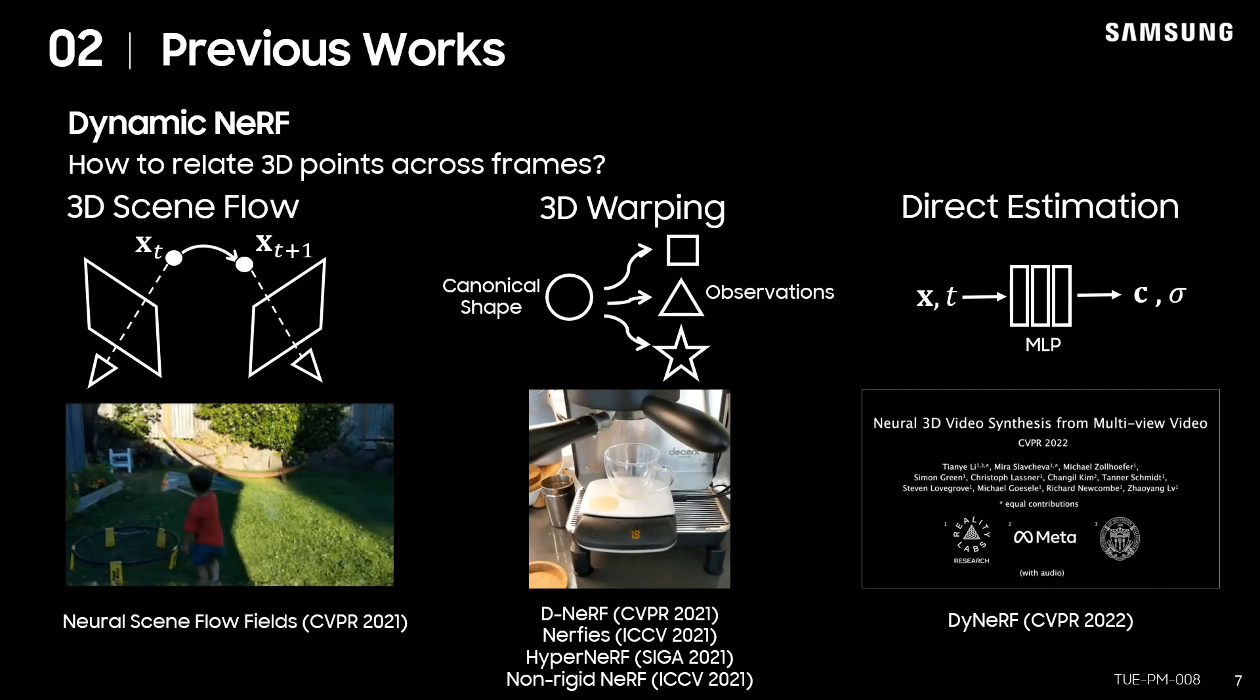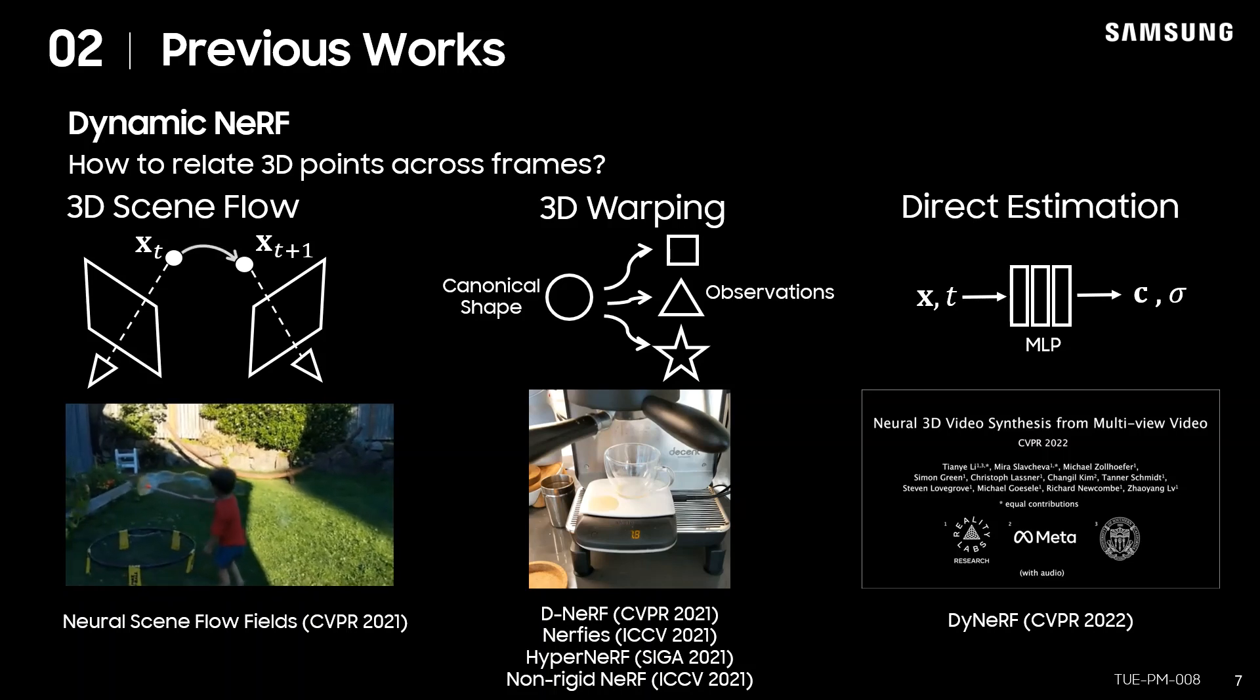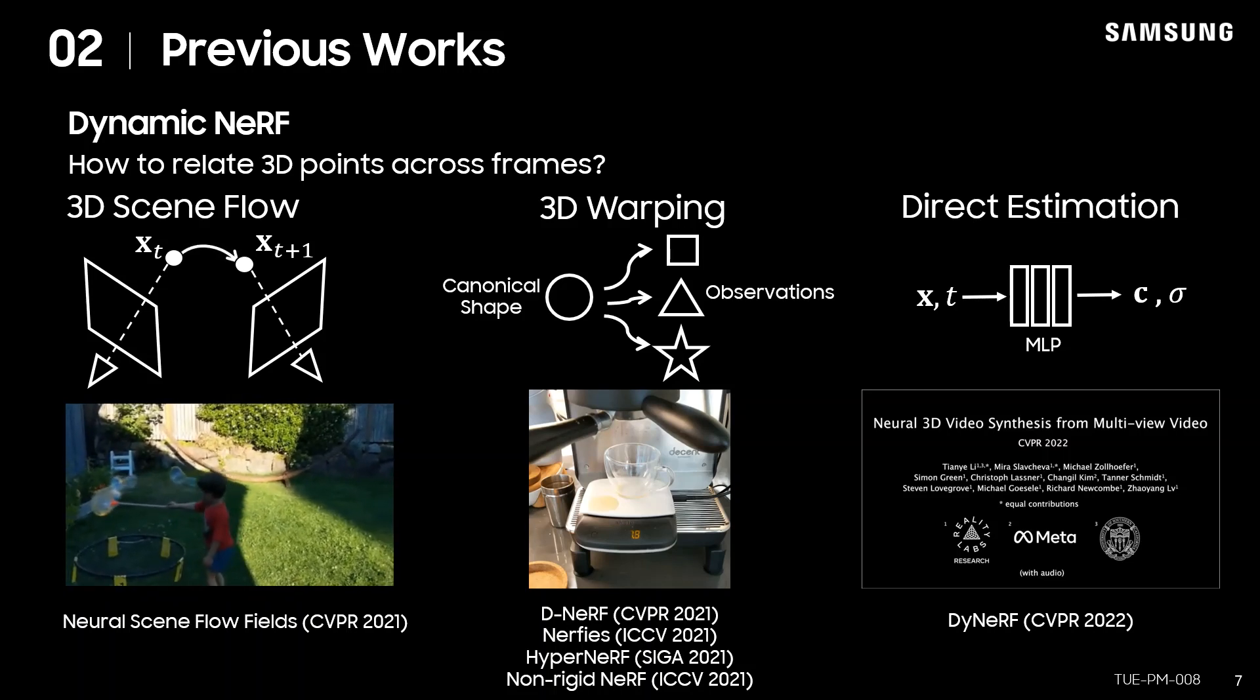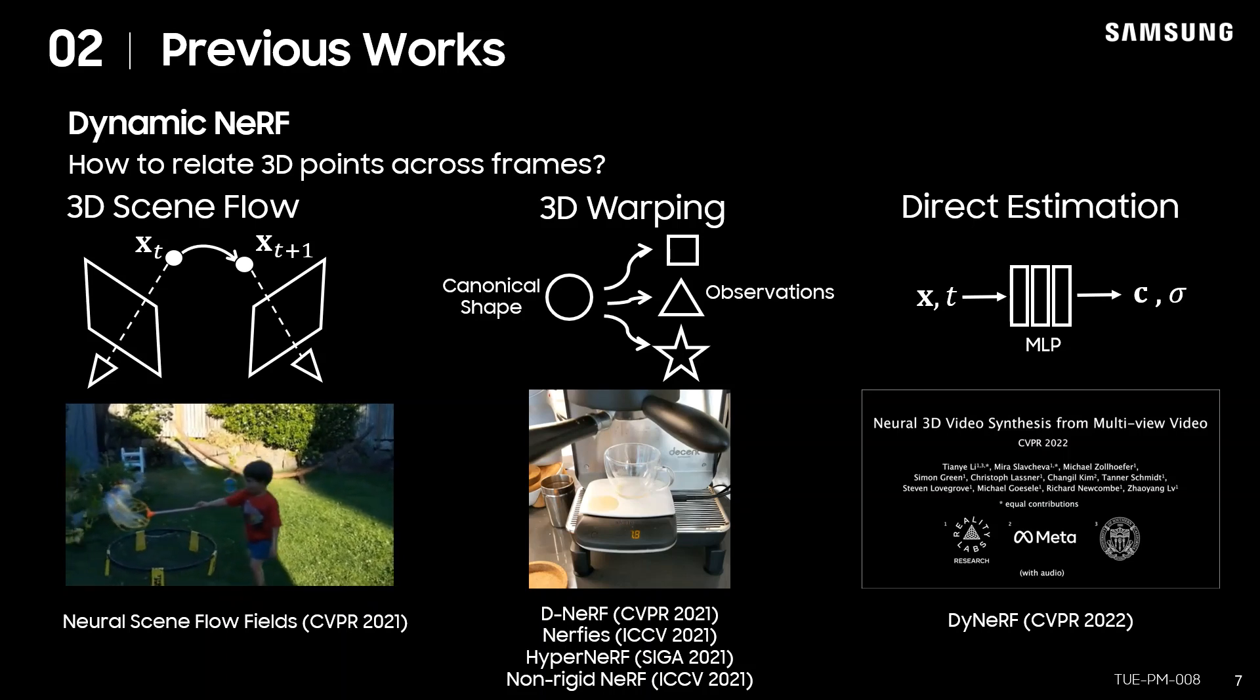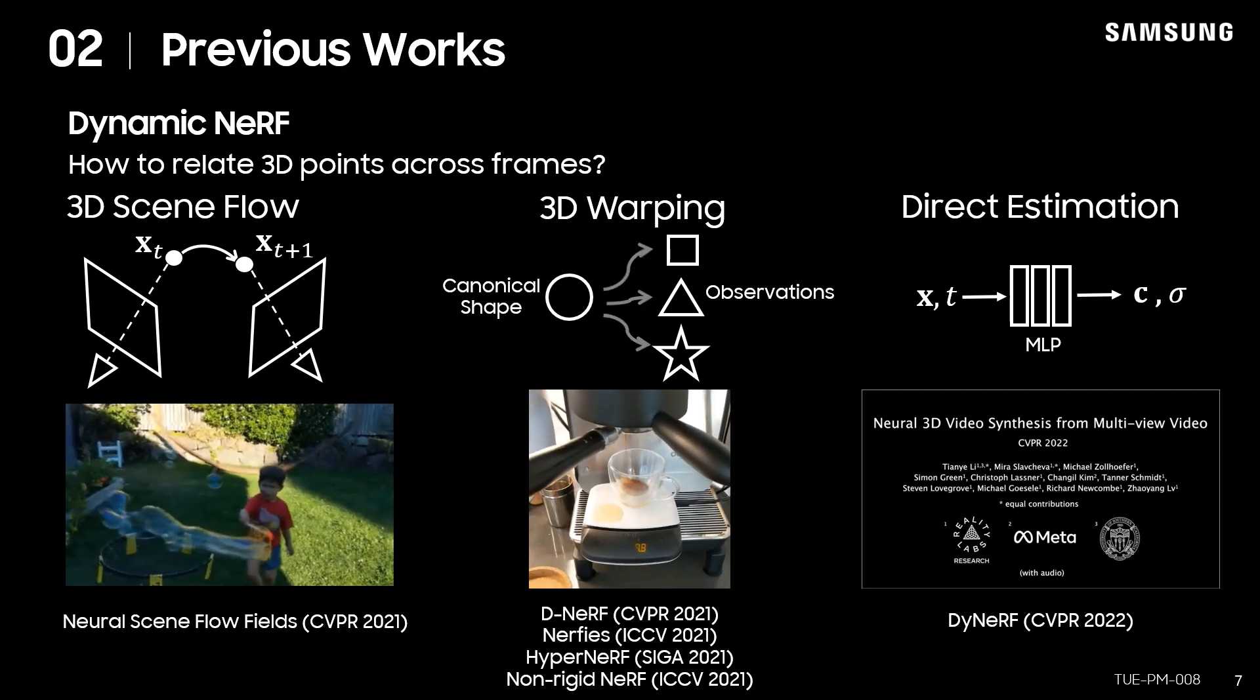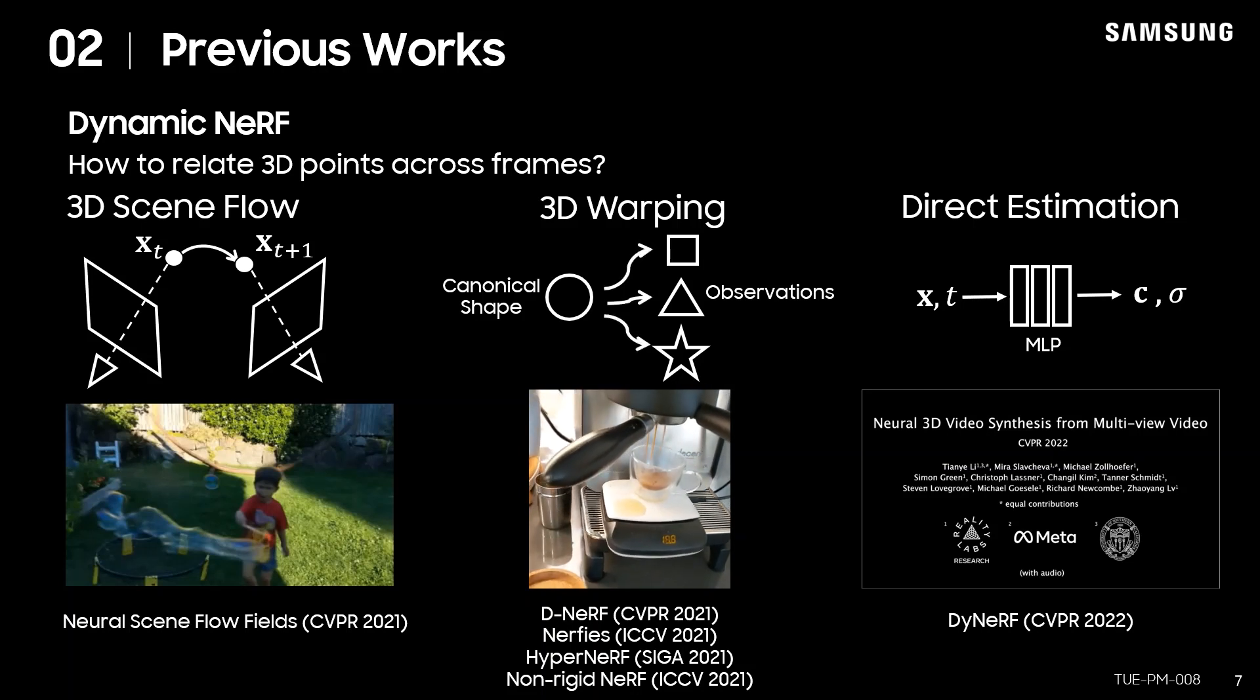Retrieving 3D structures of dynamic scenes from a video is inherently an under-constrained problem. To resolve the ambiguity, recent dynamic NeRF methods focused on finding correspondences of 3D points and shapes across the frames. Neural scene flow fields estimates 3D point correspondences between adjacent frames. Methods such as D-NeRF, Nerfies, HyperNeRF,